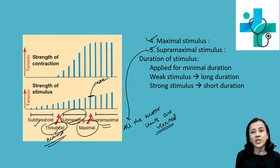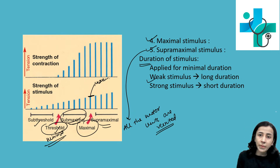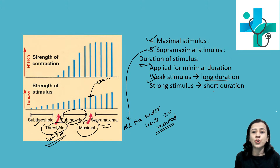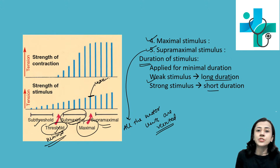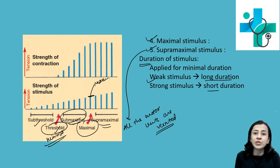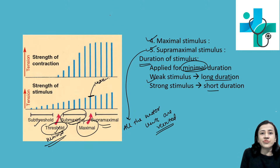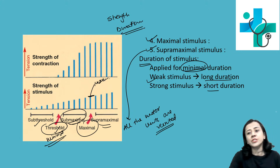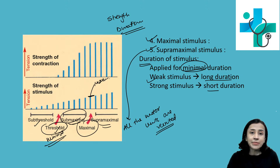The second characteristic is duration of stimulus. When the stimulus is weak, we require a long duration to get the required response. But if the stimulus is strong, we apply it for a short period of time. At minimum, we require to apply the stimulus for a minimal duration to produce a response. These two things — strength and duration — are the basics of the strength duration curve.